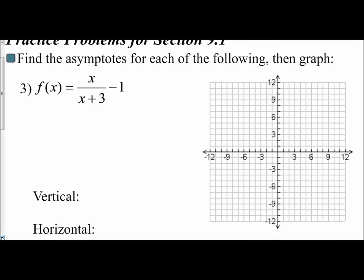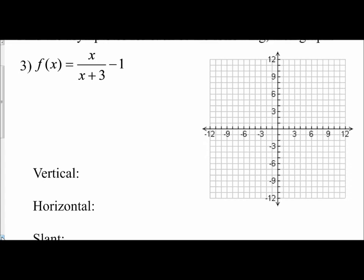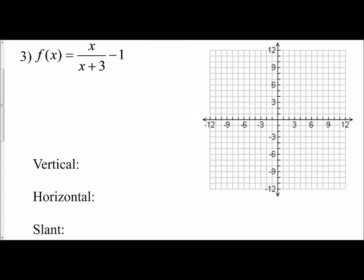The first thing I'm going to do is find my vertical asymptote, and I do that by setting the denominator, which is x plus 3, equal to 0 and solve. So x plus 3 equals 0, which means x equals negative 3. That's my vertical asymptote, and I'm going to graph that with a vertical dashed line through negative 3 on the x-axis.